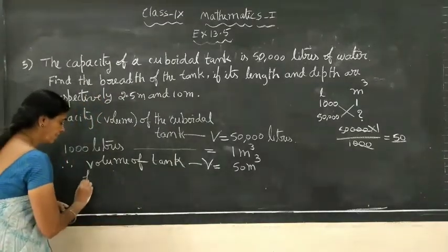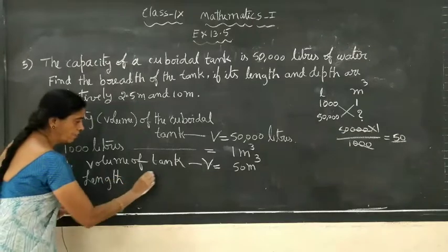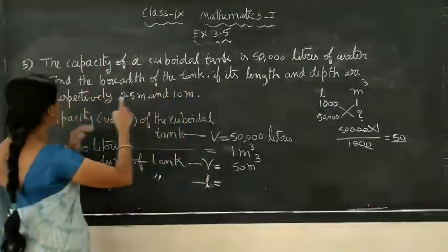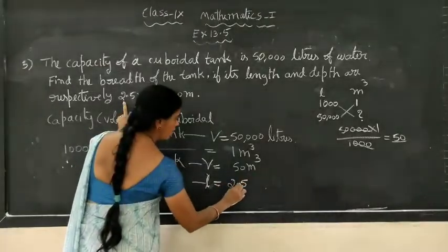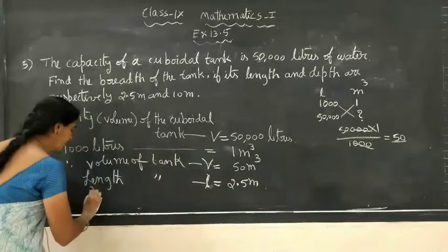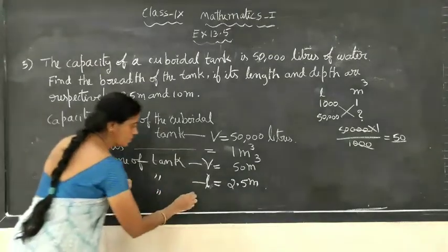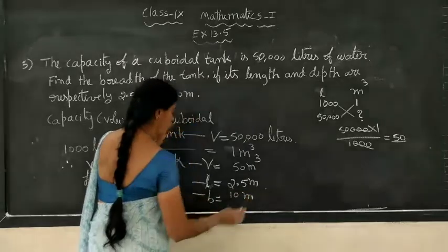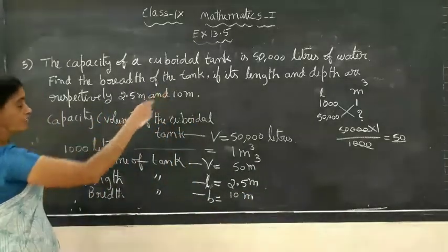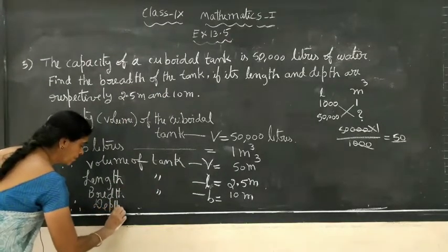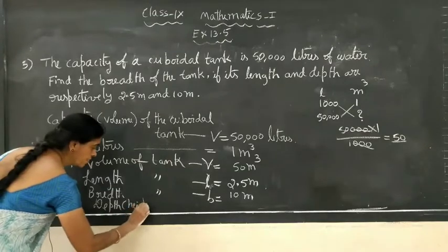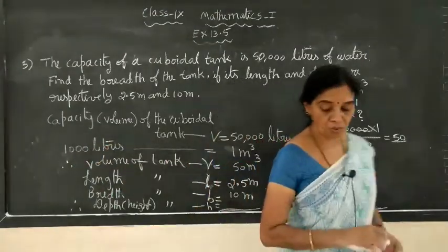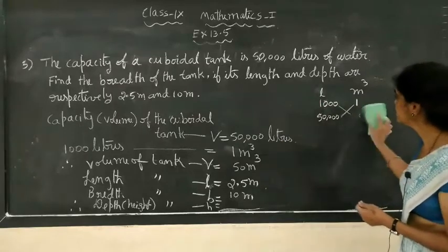Length of the tank: symbol L is equal to 2.5 meters. Breadth B is equal to — that is what we have to find. The depth (height) of the tank: symbol h is equal to 10 meters. So breadth B is the unknown we need to find.